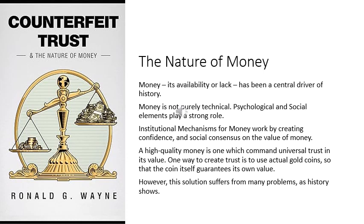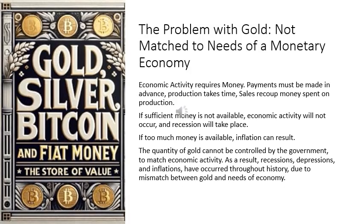However, this solution suffers from many difficulties that have been visible throughout the centuries. The critical problem with gold is that it is not matched to the needs of a monetary economy. In a monetary economy, in order to produce something you need to purchase inputs, hire labor, and do a number of things which require laying out money first — production takes place later, and then you sell your goods to get money. Without money, the production process cannot get started. If there is not enough money in the economy, productive activity will suffer, while too much money will result in inflation. The quantity of gold cannot be controlled by the government, so it fluctuates in both directions, causing harm to the economy.